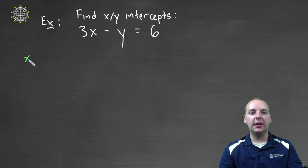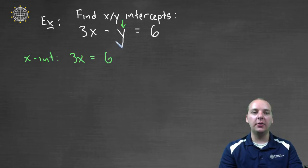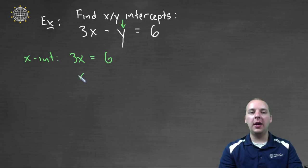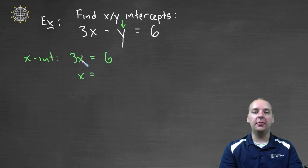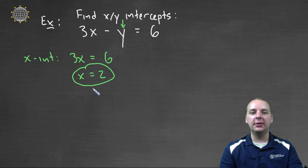So for the X intercept, we know we're going to let the Y coordinate be zero. So we'll have three X equals six, because the Y goes away. And automatically we have it, we divide by three, and X equals two. There's your X intercept. The X intercept is at the point two comma zero.